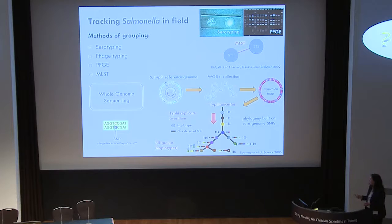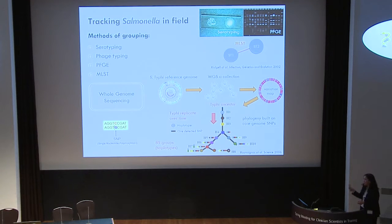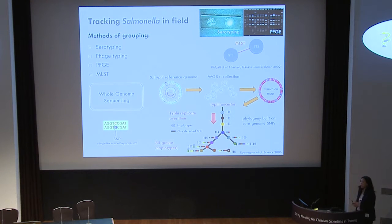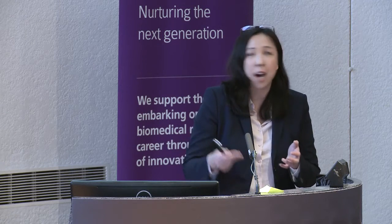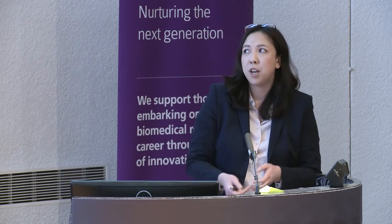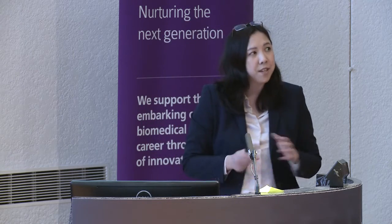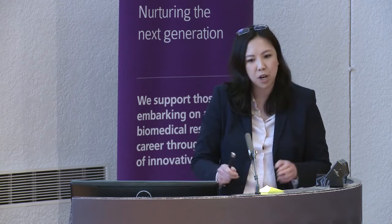Ruminak in 2006 classified typhi based on SNPs found in 200 gene fragments from a global collection of typhi. Every time he found a new SNP he allocated it a haplotype — H1, H2, H3, and so on — ending up with 85 haplotypes. That is currently how typhi is classified today.